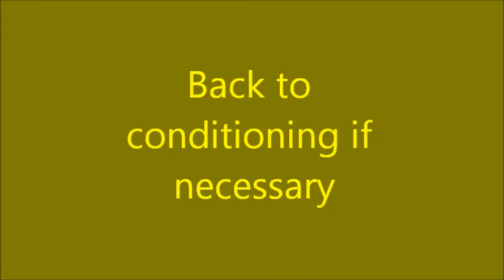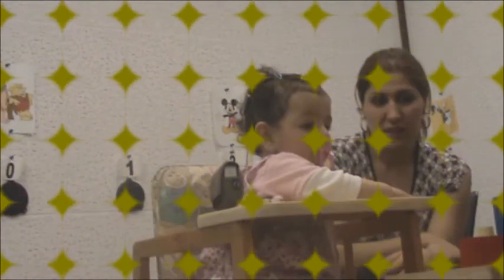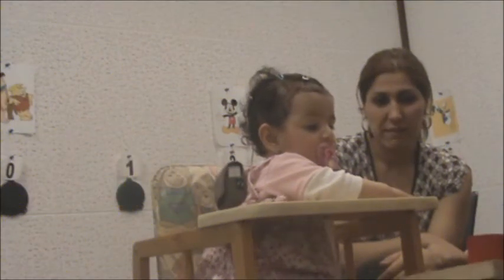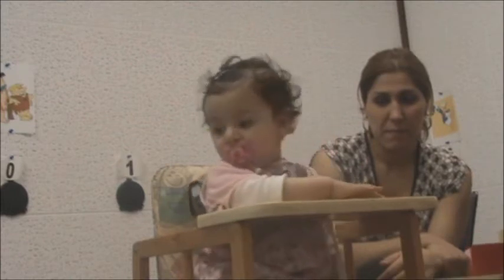Before the first stimulus sound is presented, she shows a false positive response, which is of course discouraged or ignored. When the first s is presented in a series of background z sounds, there is no reaction. To fix her attention to the stimulus sound, the distractor repeats the sound s and visual reinforcement is activated again.